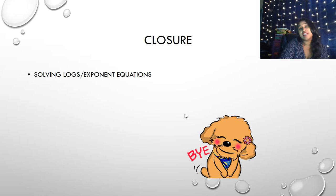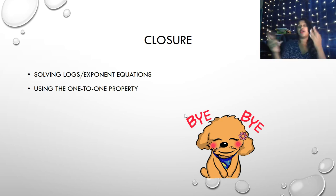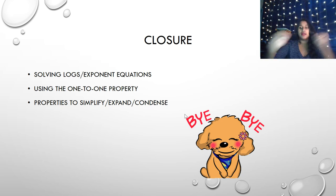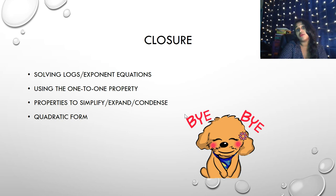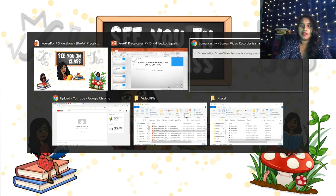Some closure — this is the end of our unit 4. We talked about solving logs as well as solving exponents. We use the one-to-one property, which means do everything in your power — use simplification, expansion, condensation — to get to the same base, whether it's exponential, logarithmic, or natural log. You can also use the quadratic formula with U-substitution. And finally, always check your extraneous solutions. Thank you, and I will see you in class.